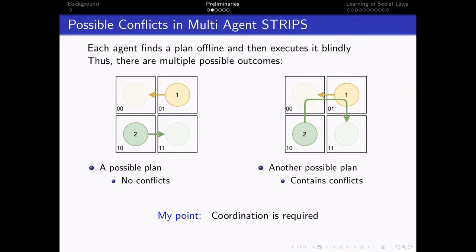Under this setting, each agent finds a plan offline and then executes it blindly. Thus, there are multiple possible outcomes. In this very simple two agents, two on two grid domain, one possible outcome is described on the left.